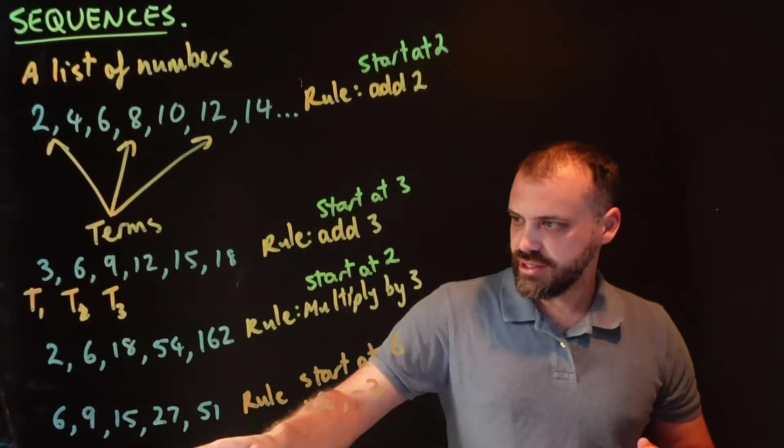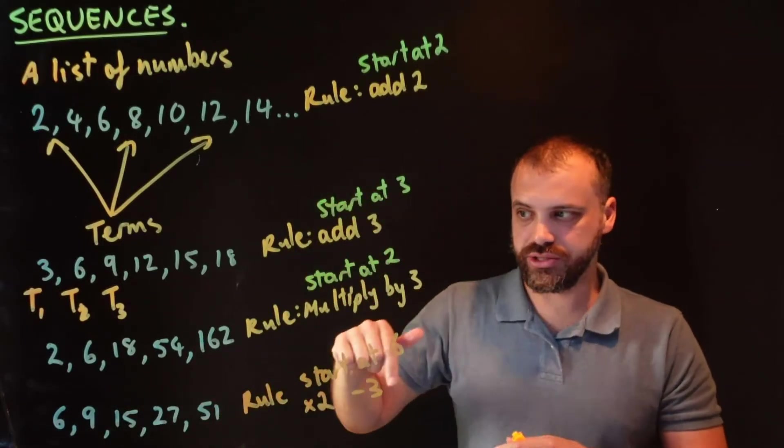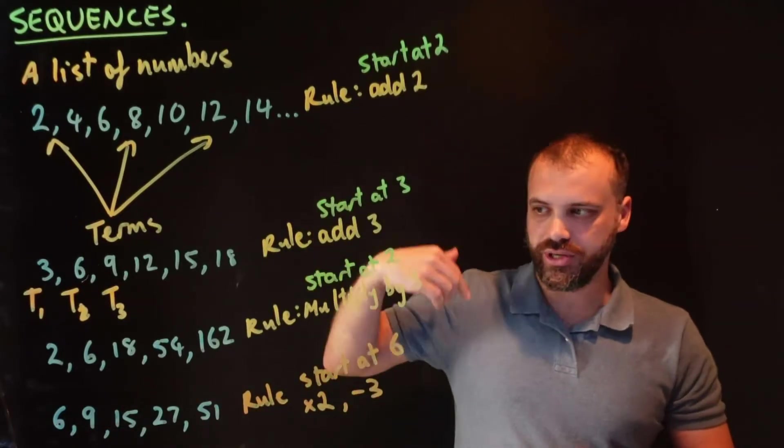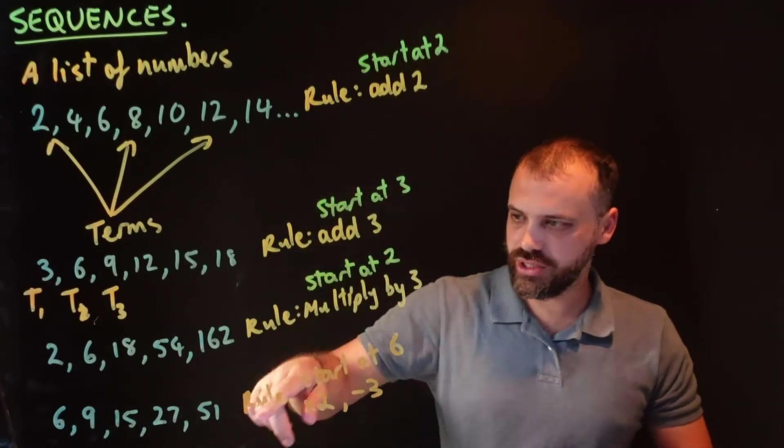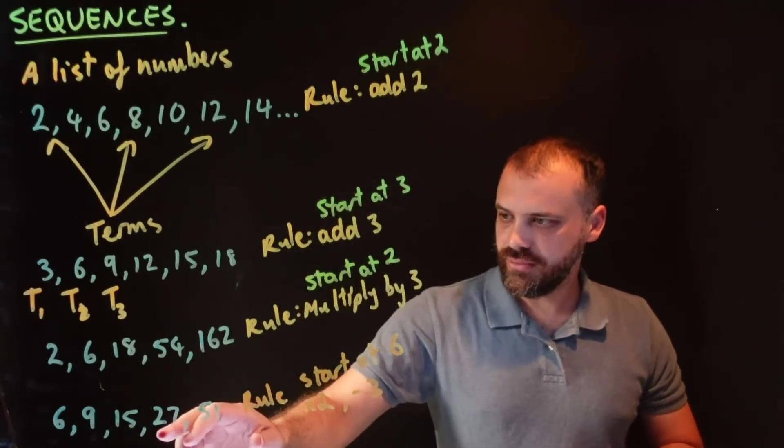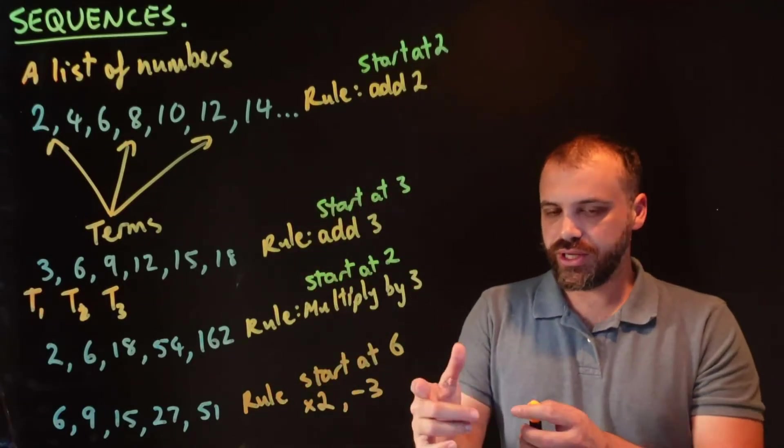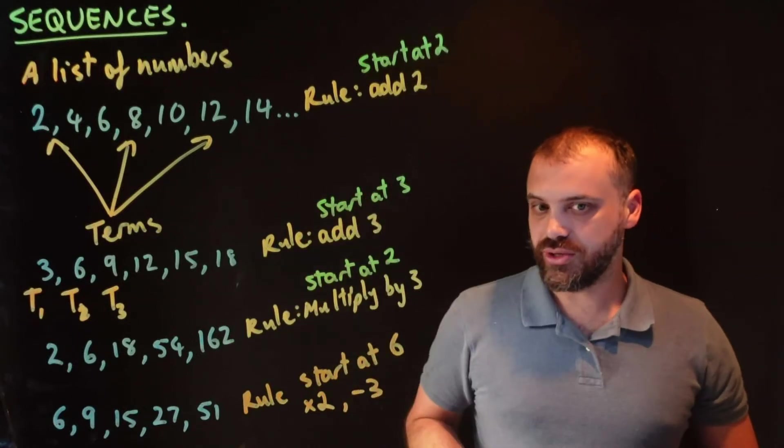Let's double check. Starting at 6, multiply by 2, that's 12, minus 3, 9. Double this, so times 2, 18, minus 3, 15. Times 2, 30, minus 3, 27. Multiply that by 2, 54, minus 3, 51. It works. So we can have all sorts of wild rules here for our sequences.